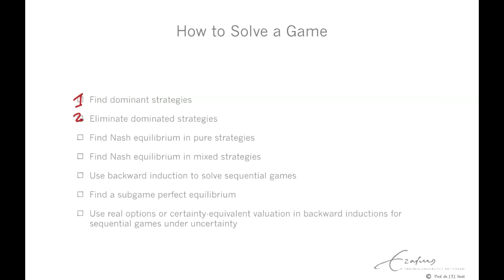One should proceed by successive elimination of dominated strategies. At each stage, elimination of dominated strategies for a player at the previous stage might uncover dominated strategies for other players, and finally leads to finding the Nash equilibrium.